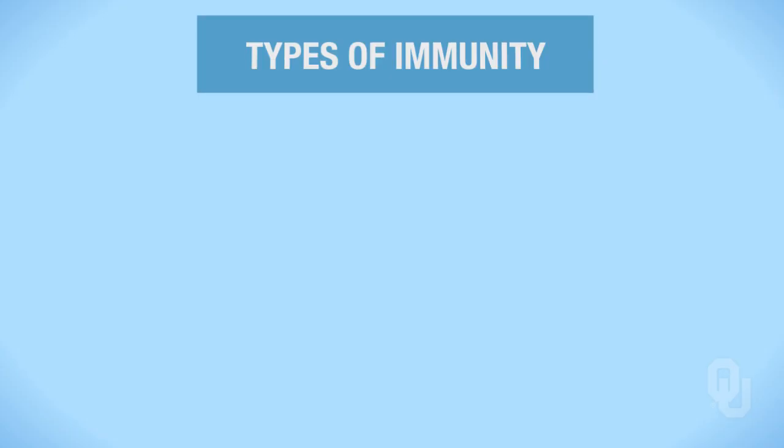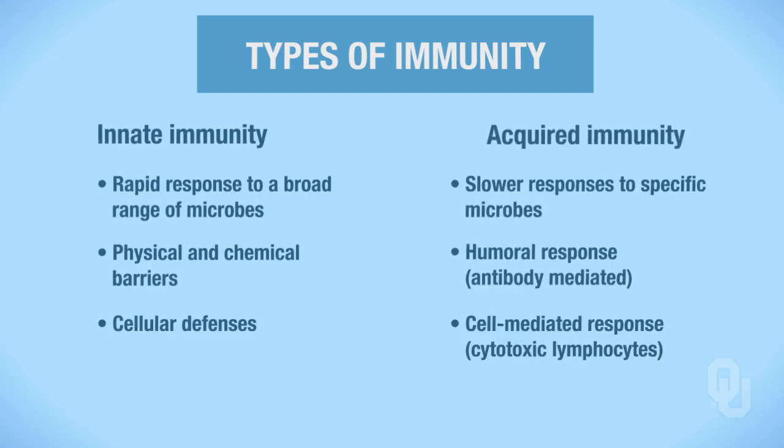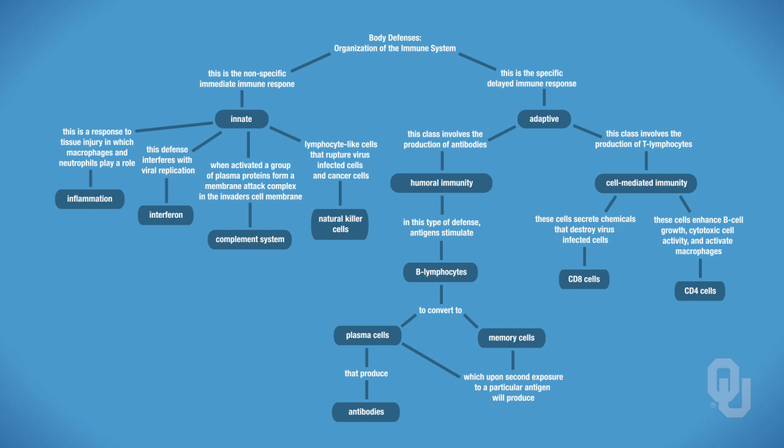Remember that there are two different types of immunity: innate immunity and acquired immunity. Here we're focusing on acquired or adaptive immunity. Remember that these are slower responses than an innate response, and the responses are to very specific microbes. Before we get into the different types of responses, let's look at the outline of where we're going to go in this section.